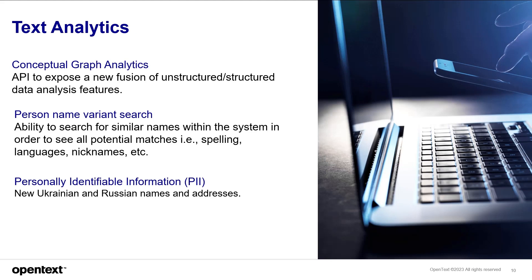In text analytics, EIDL 23.2 provides conceptual graph analytics — an API to expose the new fusion of unstructured and structured data analysis features. We also have person name variant search, the ability to search for similar names within a system. New personally identifiable information capabilities have been added for a couple of additional countries.